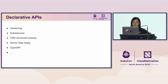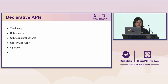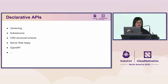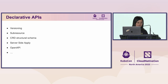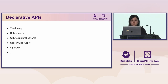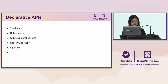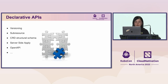Over time, there has been a lot of effort to make declarative APIs more powerful — versioning, sub-resources, structural schemas, defaulting, server-side apply, OpenAPI v3, and more. But there are still things we're not able to do well in declarative APIs just yet. Today we're going to talk about one of the notable missing pieces: data validation.